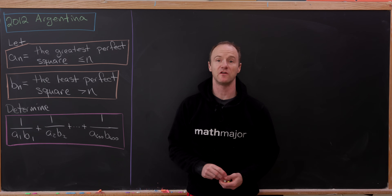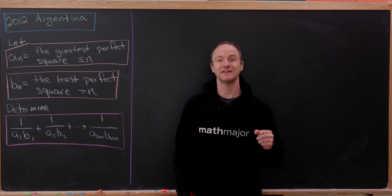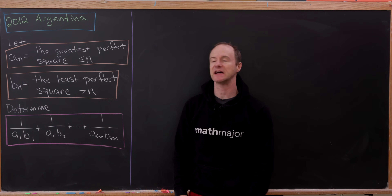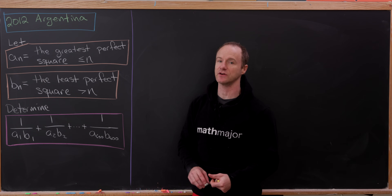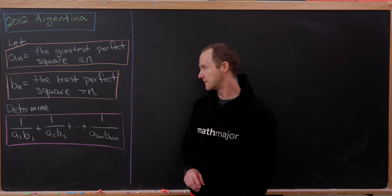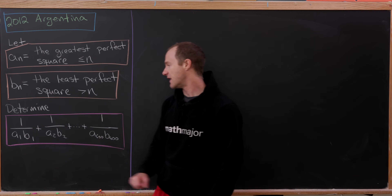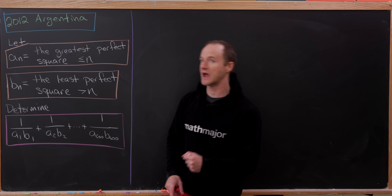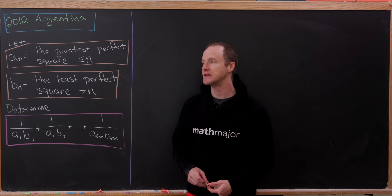Today we've got a nice problem from a 2012 math contest in Argentina. We want to define two sequences of natural numbers, a_n and b_n. a_n is the greatest perfect square less than or equal to n, whereas b_n is the least perfect square which is bigger than n. Then we'd like to determine the finite sum: 1/(a_1·b_1) + 1/(a_2·b_2) + ... + 1/(a_600·b_600).